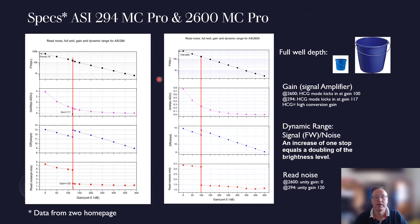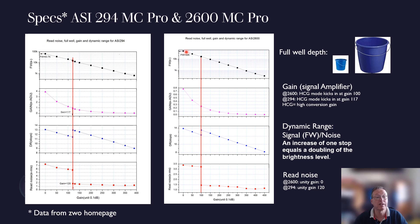These are the detailed specs from the ZWO homepage. You have busy charts here - full well depth, which is another term for how big your bucket is in collecting photons before it saturates. That point goes to the 294 because the full well depth is higher initially compared to the 2600.